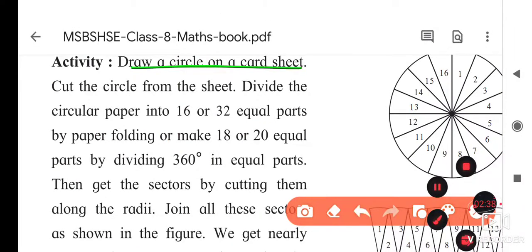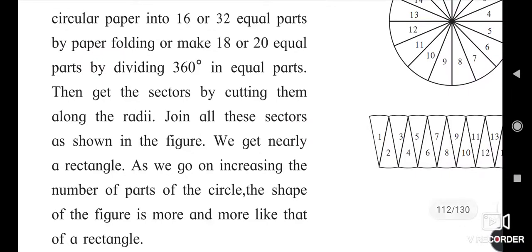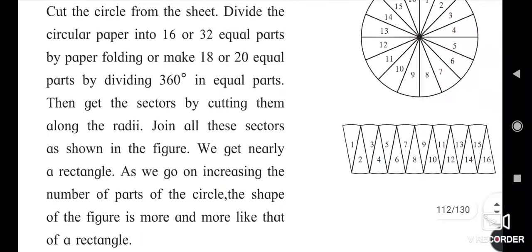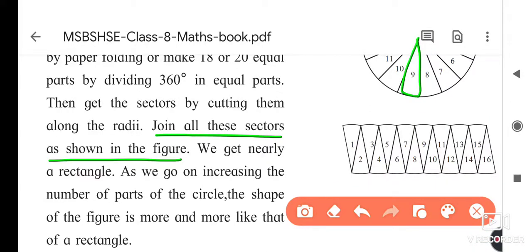Draw a circle on a card sheet, then cut the circle from the sheet. Divide the circular part into 16 to 32 equal parts — here there are 16 parts, numbered 1 through 16. Cut them and by paper folding make 18 to 20 equal parts, dividing 360 degrees into equal parts and getting sectors. Cut along the radii and join all these sectors as shown in the figure, and we get nearly a rectangle.